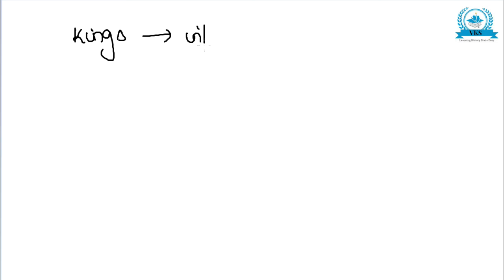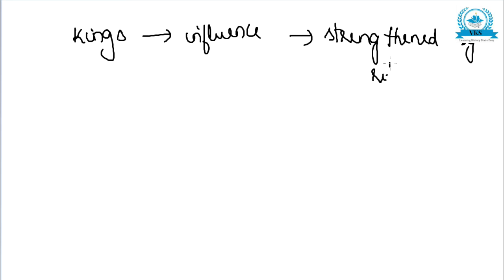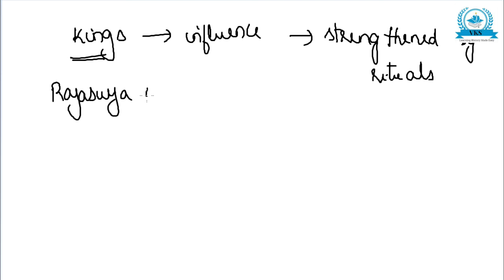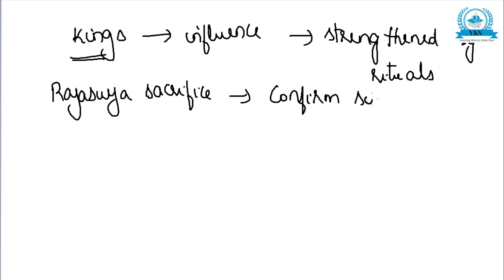The king's influence was strengthened by rituals. The royal power had become very important, and the king's influence was strengthened through the performance of rituals. He performed the Rajasuya sacrifice, which was supposed to confirm supreme power to him.